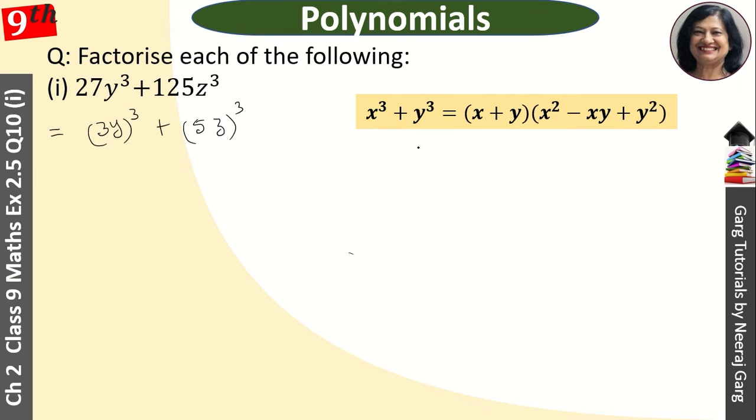So this is clear. We have x is 3y and y is 5z. Let's put it in the identity. So here is our 3y + 5z.